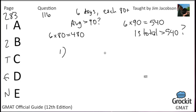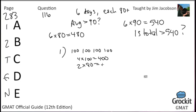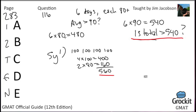Statement 1: for the four days with the greatest number of people, the average was 100. So 4 × 100 = 400 for those days. For the remaining two days, we know from the original problem each had at least 80 people. So at minimum 2 × 80 = 160. Total = 400 + 160 = 560. The question was: is the total greater than 540? Here we know the total was at least 560, so yes, the average was more than 90. Statement 1 is sufficient; cross off B, C, and E.